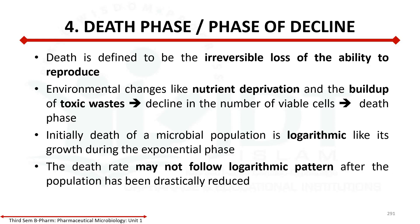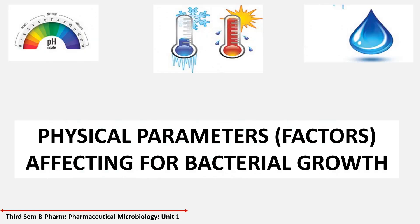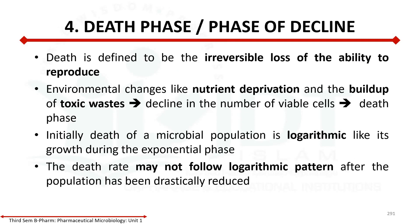The death phase or phase of decline occurs due to the irreversible loss of ability to reproduce. We will not multiply in the death phase. Environmental changes like nutrient depletion, build-up of toxic waste, and declining number of viable cells lead to the death phase. The initial death of the microbial population is logarithmic, similar to how it grew in the exponential phase. The rate of cell death increases with increasing toxic concentration.